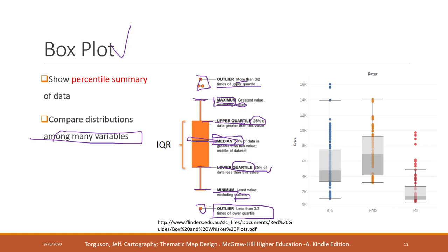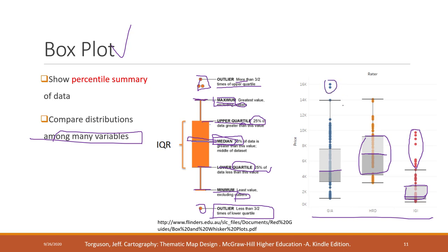Here we have an example showing three variables on a box plot. The yellow one has the highest median value and the red one has the lowest median value. The red data are more concentrated — its box is smaller — while the yellow data are more scattered. The red one also has many outliers, and the yellow one has the highest maximum and minimum values.